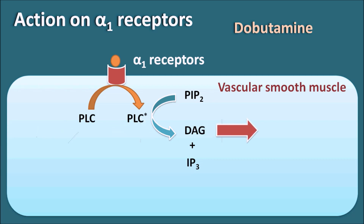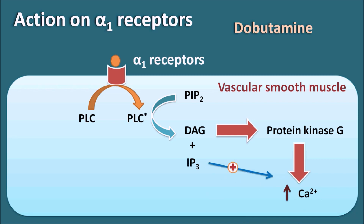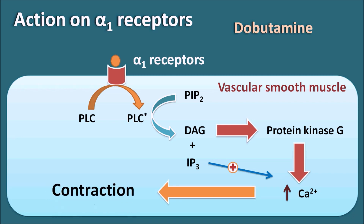Diacylglycerol stimulates protein kinase, which increases intracellular calcium. IP3 can also increase calcium release from intracellular stores, thereby increasing calcium within the vascular smooth muscle. As more calcium becomes available in the vascular smooth muscle, it results in contraction of the vascular smooth muscle. In this way, Dobutamine can produce vasoconstriction by acting through alpha-1 receptors.